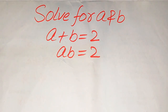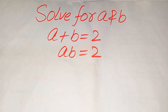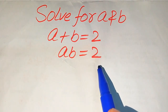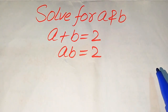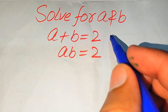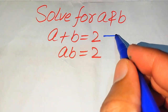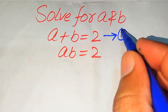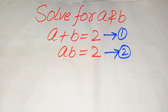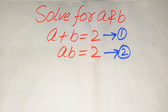Hello everyone. How to solve this problem for the values of a and b: if a plus b equals 2 and a times b also equals 2, we need to find the values of a and b. We call these equation number 1 and equation number 2, and we will solve these two equations to get the values of a and b.